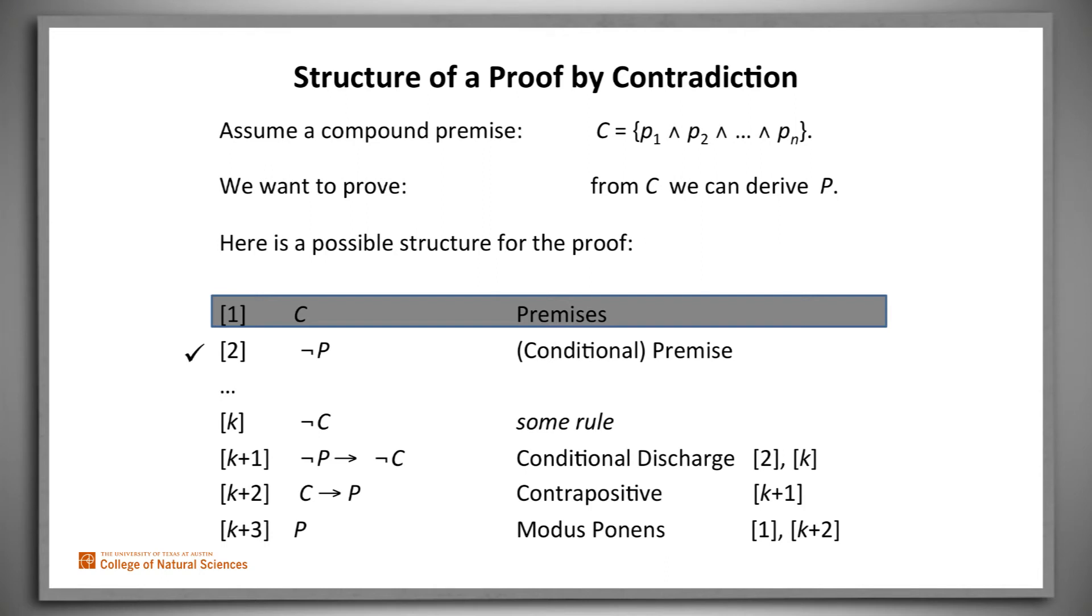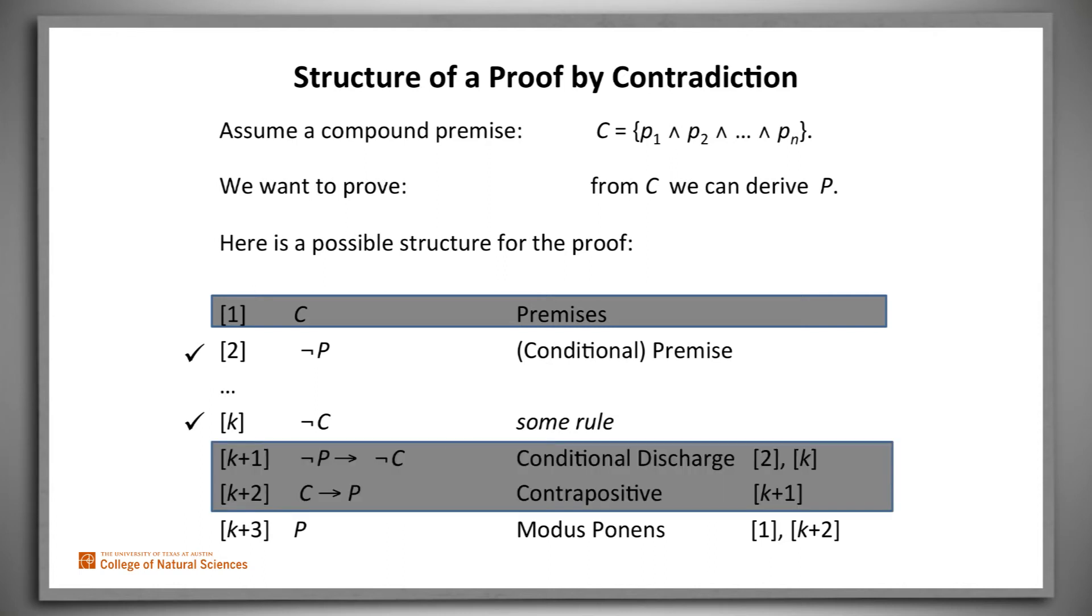We do need to assert the assumption not P. And then we need to do our reasoning and derive a contradiction. We can skip the next two steps since they simply transform what we already know. So we can just go immediately to the conclusion we've proved P.